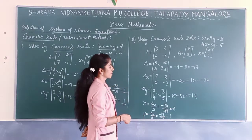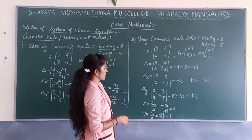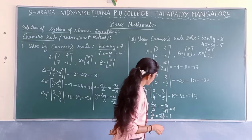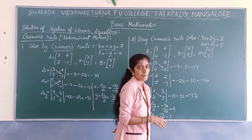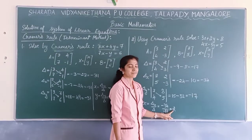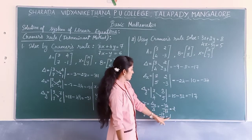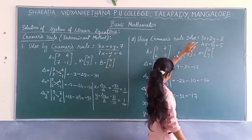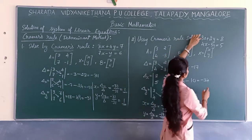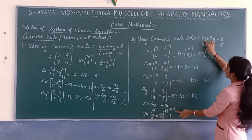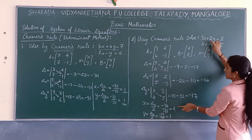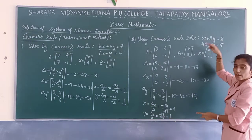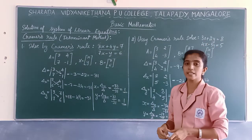Now we check whether the answers are correct. Substitute x=2, y=1 into the first equation: 3×2 + 2×1 = 6 + 2 = 8. This matches the RHS, so what we got is correct.